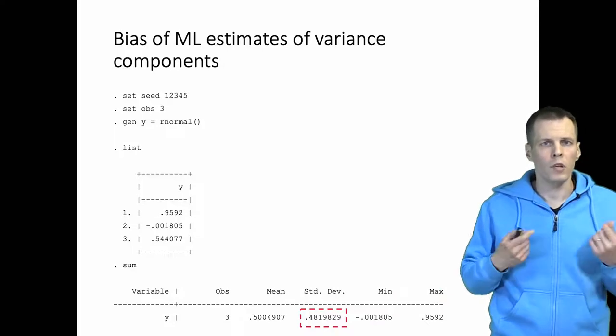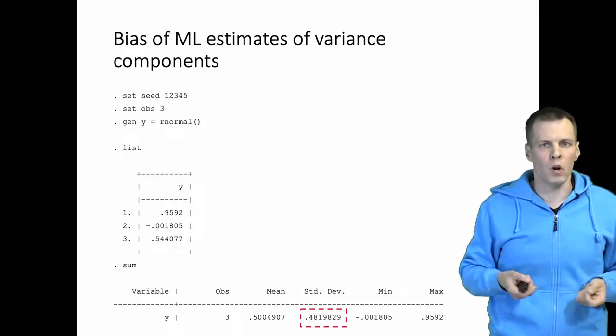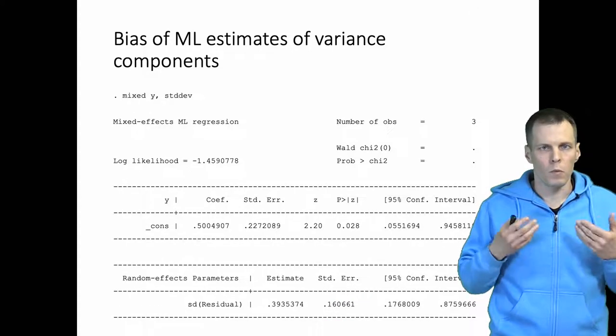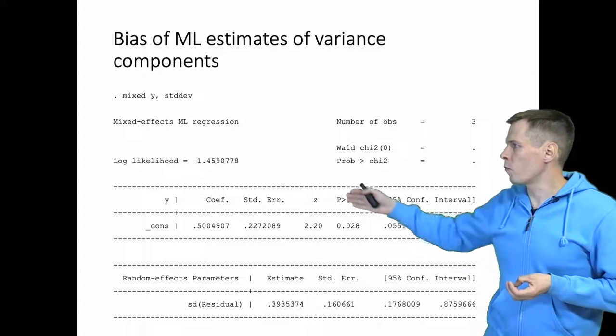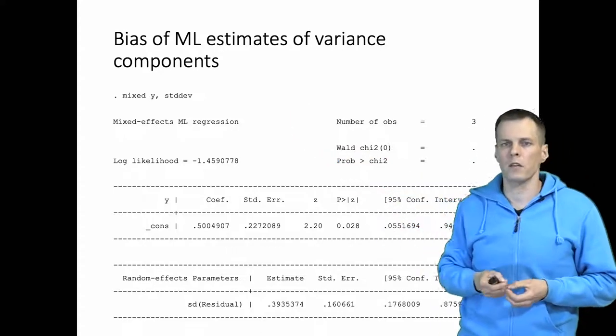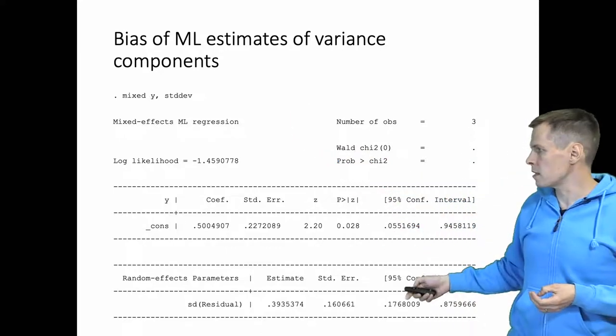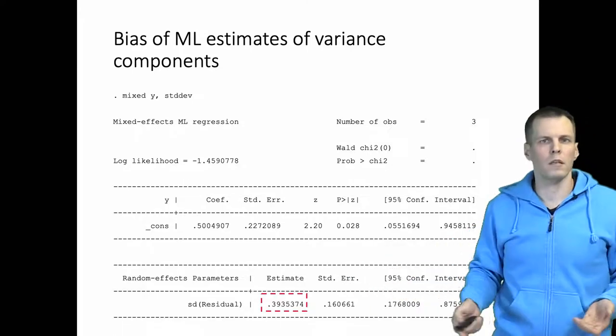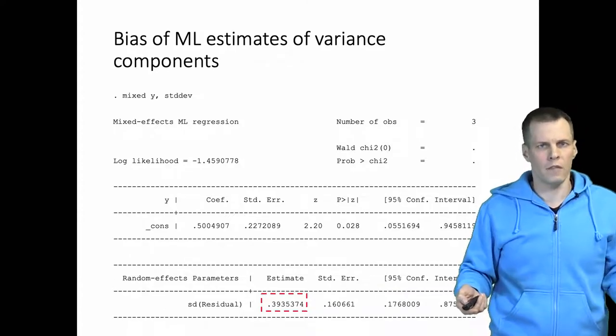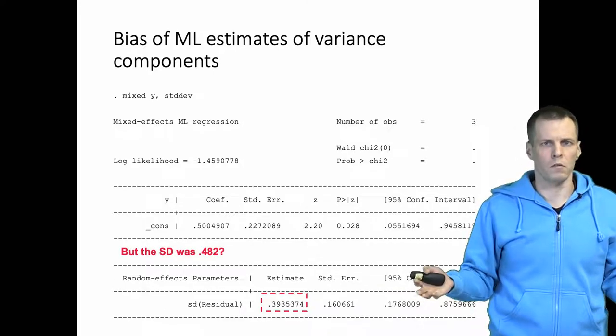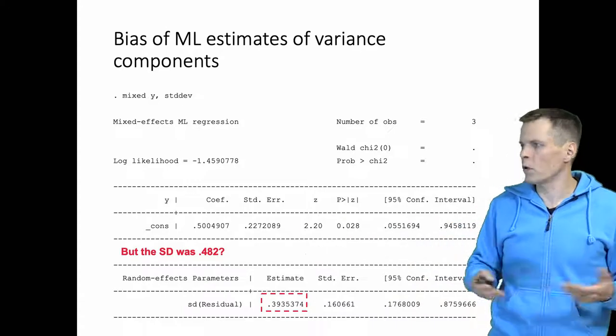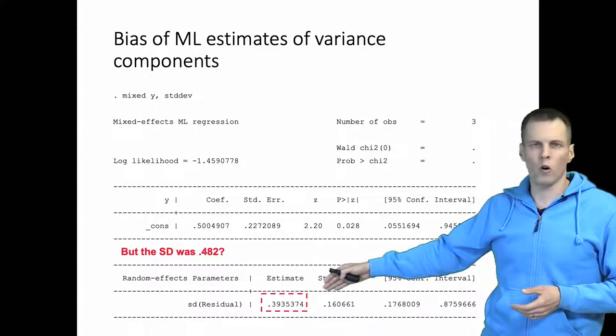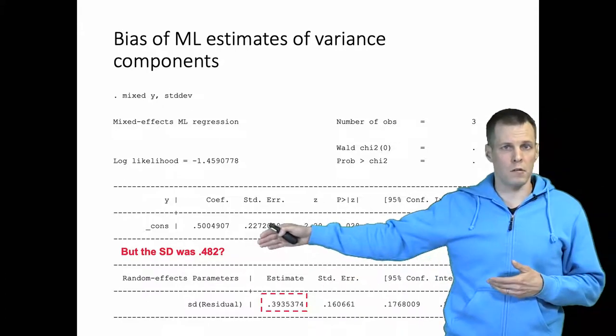So what happens when we run a mixed model and we get the variance component for the error term? When we run a mixed model of y, we represent the result in standard deviation metric. We can see that the estimated standard deviation is 0.39, but in our actual data the standard deviation was 0.48. So what's the deal here? Why are these maximum likelihood estimates of the variance smaller than the actual sample variance?